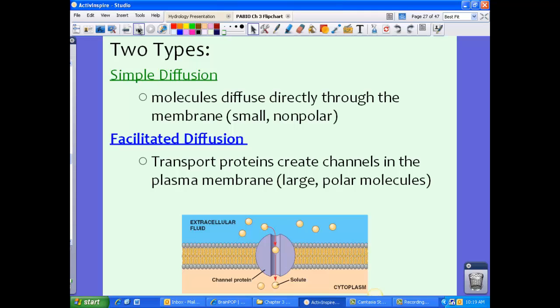So while we have diffusion or simple diffusion as our first type of passive transport, remember simple diffusion is just where molecules diffuse directly through the membrane. These typically are your smaller, nonpolar substances. We have facilitated diffusion, which is our second type of passive transport. This is where transport proteins actually will create channels within the plasma membrane. We were talking about this yesterday. These channels allow certain things such as larger or maybe even polar molecules to move through the plasma membrane.